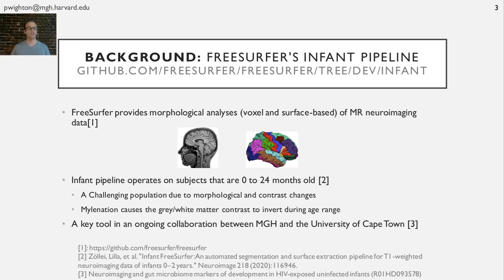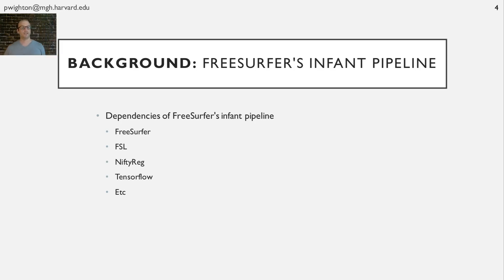FreeSurfer's infant pipeline is a key tool in an ongoing collaboration between Massachusetts General Hospital and the University of Cape Town to study how the gut microbiome and human milk oligosaccharides mediate the impact of maternal HIV infection and antiretroviral drug exposure on infant brain development. The pipeline has several dependencies, which can make replicating environments exponentially more difficult as the possible number of software versions increases. And this is for sophisticated users — replicating exact environments is near impossible for others.